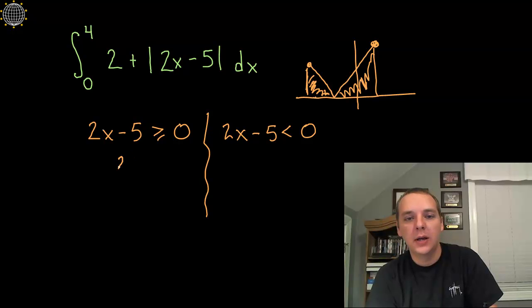So here we go. If we solve for x here, we'd have 2x is greater than or equal to 5, and so x is greater than or equal to 5 halves. And then on the other side we have 2x is strictly less than 5, so x is less than 5 halves.